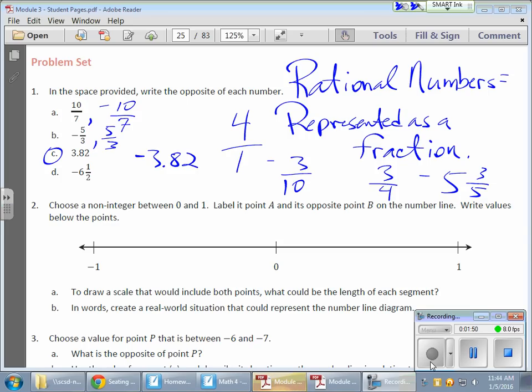Choose a non-integer between zero and one. In other words, let's take three-quarters. That's a non-integer - integers are whole numbers - and here's a rational number that is a non-integer.